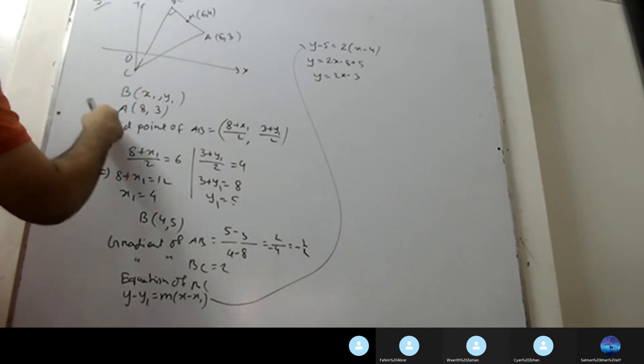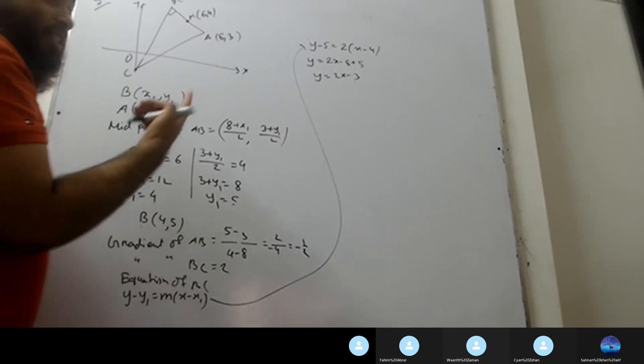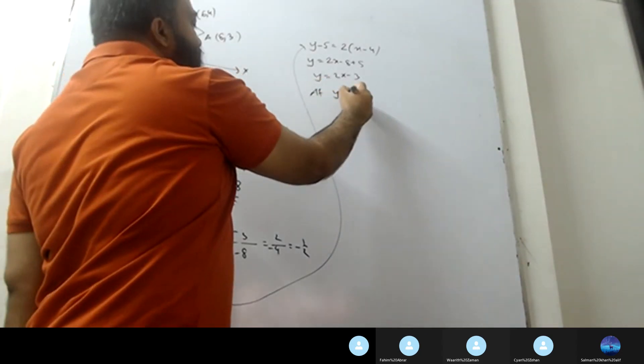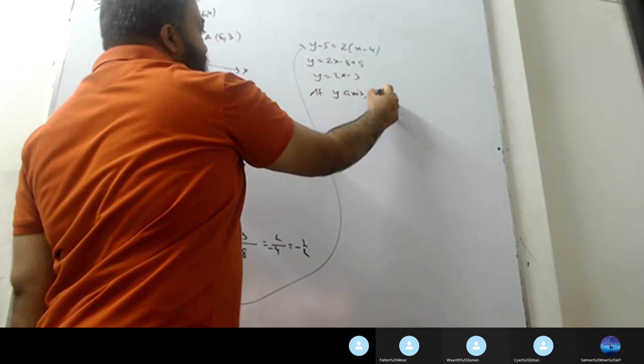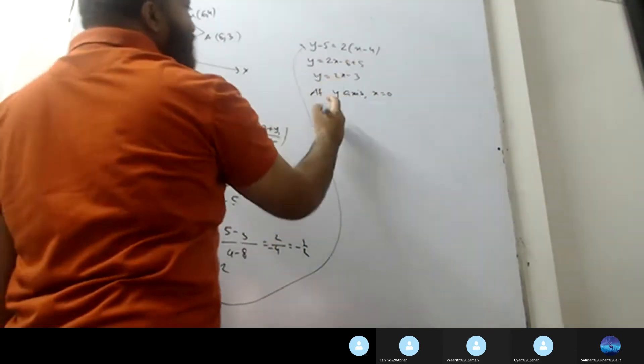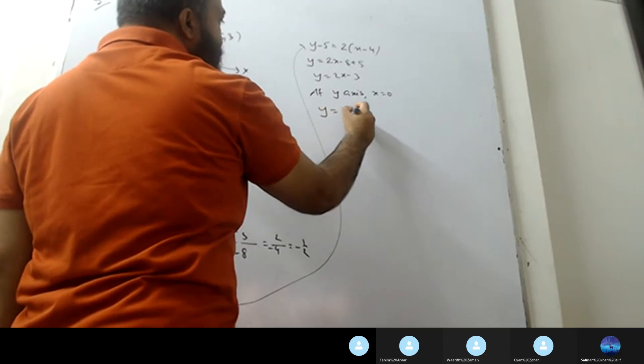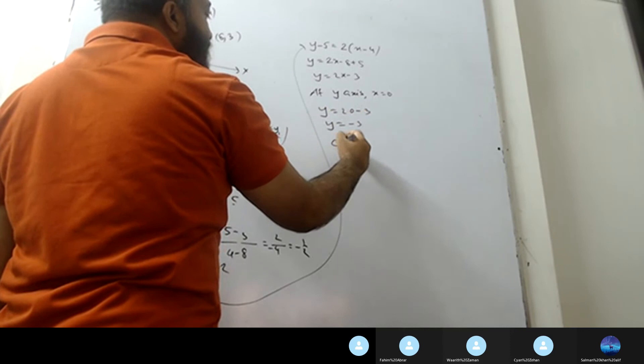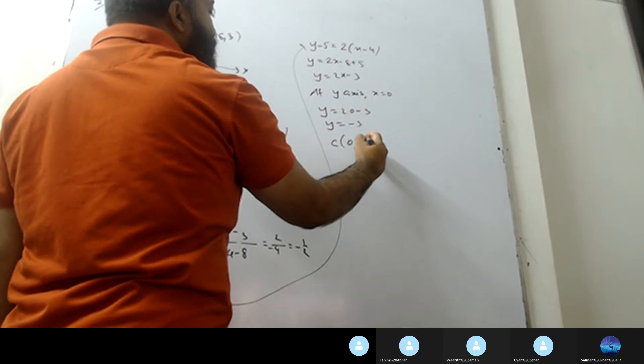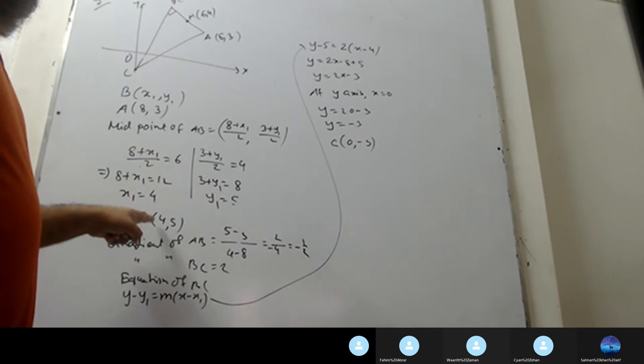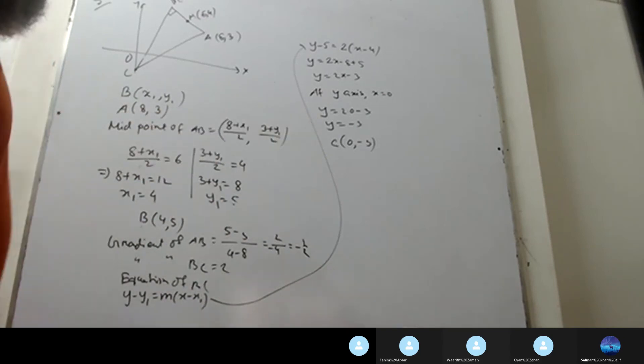To find where the line intersects the Y-axis, the coordinate has x equals 0. In the line equation, put x equals 0. Y equals 2 times 0 minus 3. Y equals negative 3. So C coordinate is (0, minus 3).